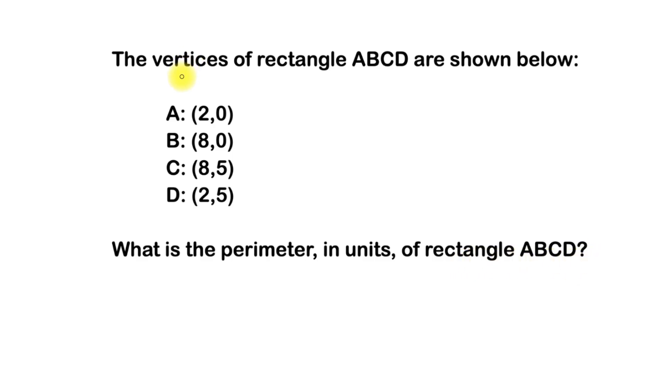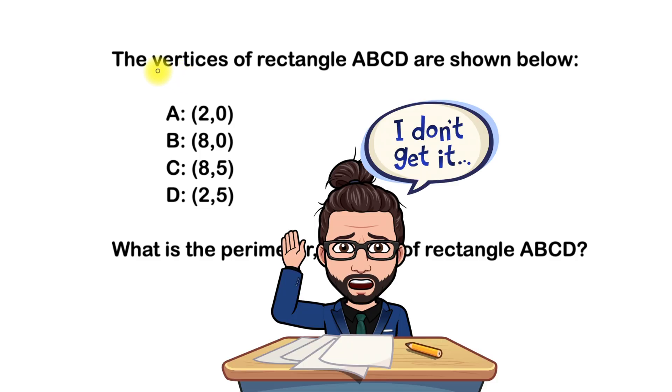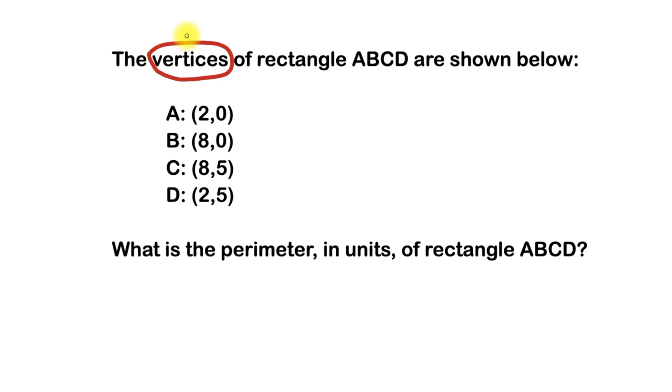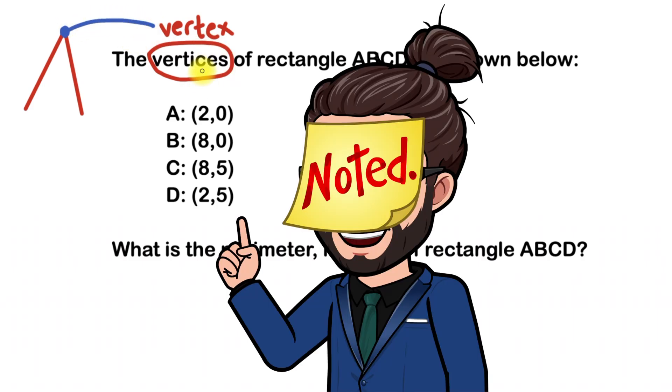The first thing that might confuse you is this word here, vertices. Vertices is just when you have more than one vertex. And in case you don't know, a vertex is the point where two line segments meet. So let's say for example, I have this line here, and this line here. They meet at this point here. Therefore, this point is what you would call the vertex. And because there's more than one vertex, we call them vertices.